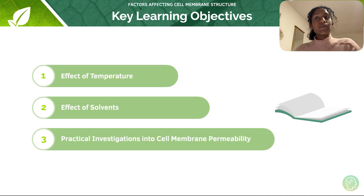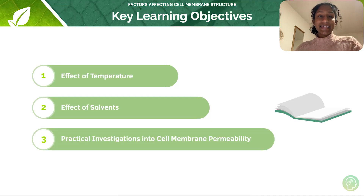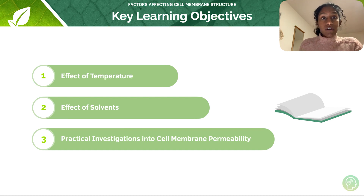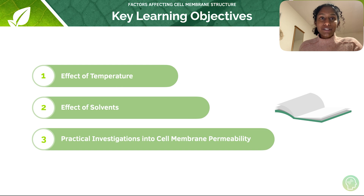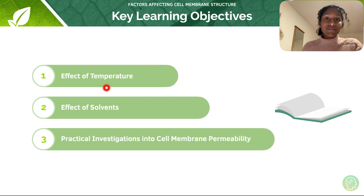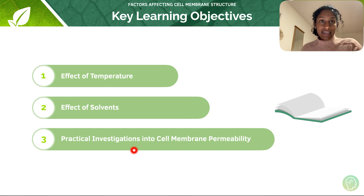Moving on, in this tutorial we have three key learning objectives to think about. Number one, the effect of temperature on cell membrane structure. Number two, the effect of solvents. And number three, practical investigations into cell membrane permeability.